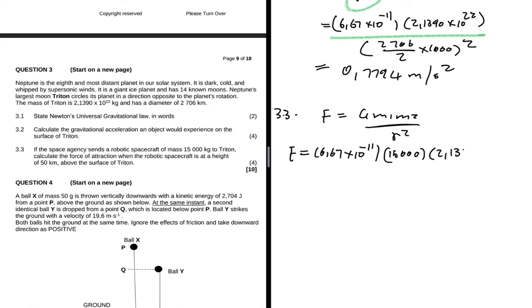The way you order the masses doesn't really matter because they're pulling each other with the same force. And then we divide by r squared. So what is r? We know that the radius of Triton is 2786 divided by 2 multiplied by 1000.